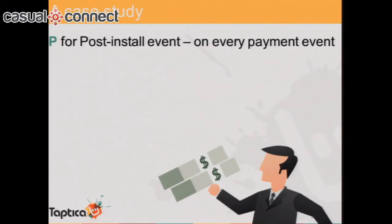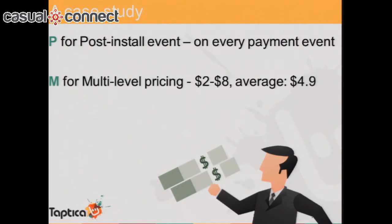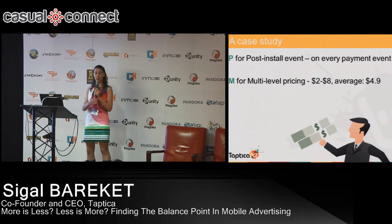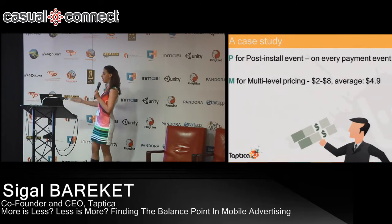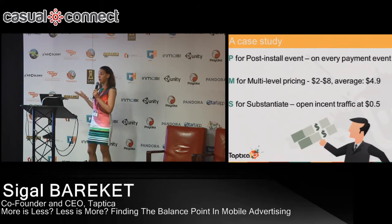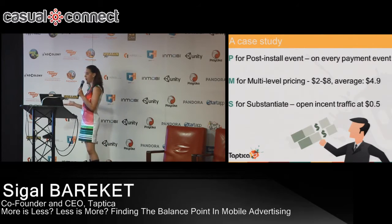First, P — post-install events. They added a post-install event and sent the information to us, so we could know every time a user paid in their application. This was very helpful to close down all media sources that were not generating paying users. Then M — multi-level pricing. They started at $4, but now they were paying everything between $2 and $8, with an average of $4.90 — not far from where they started, but covering the full range. And for S — the experiment was adding incentivized traffic at half a dollar per user, because there is no such thing as bad media.